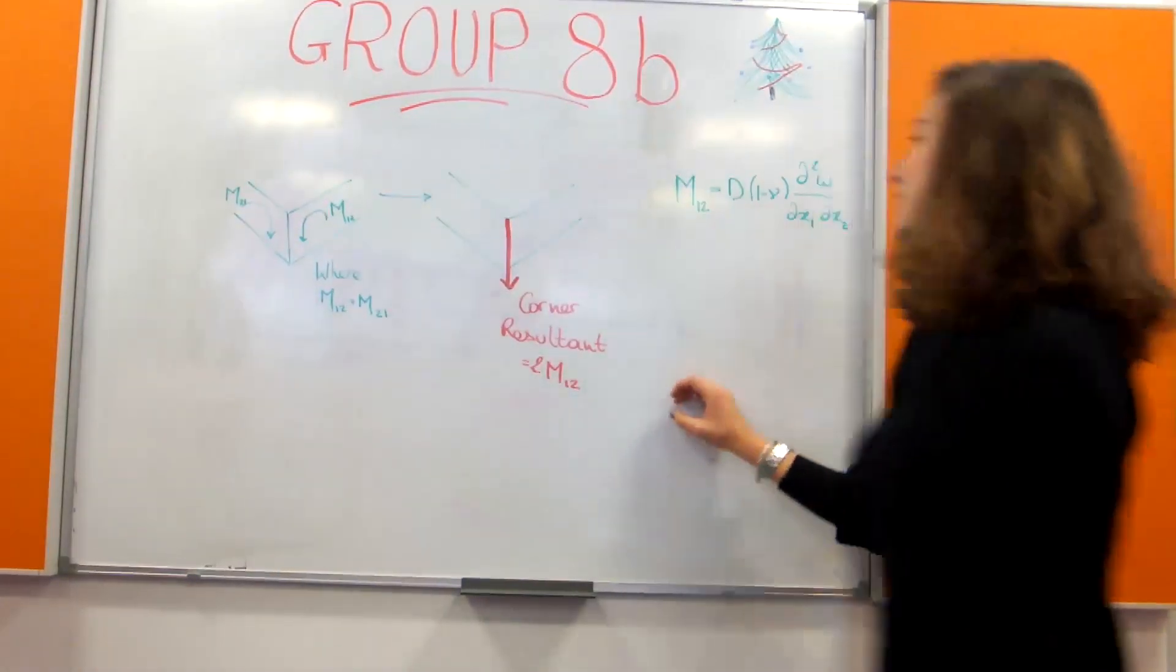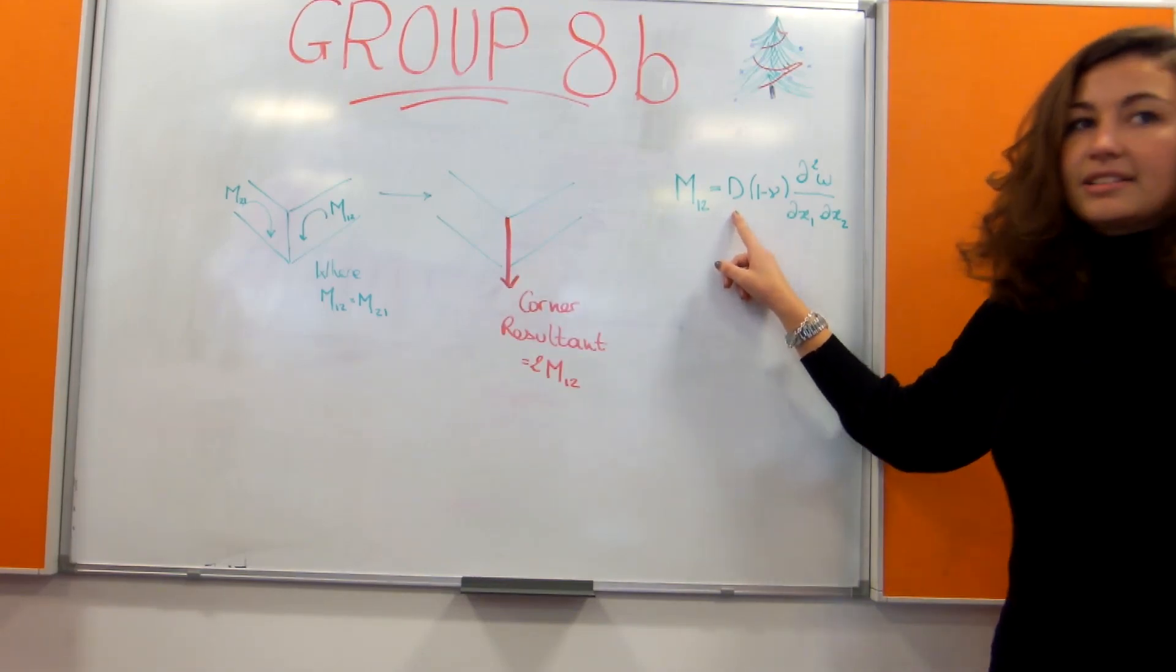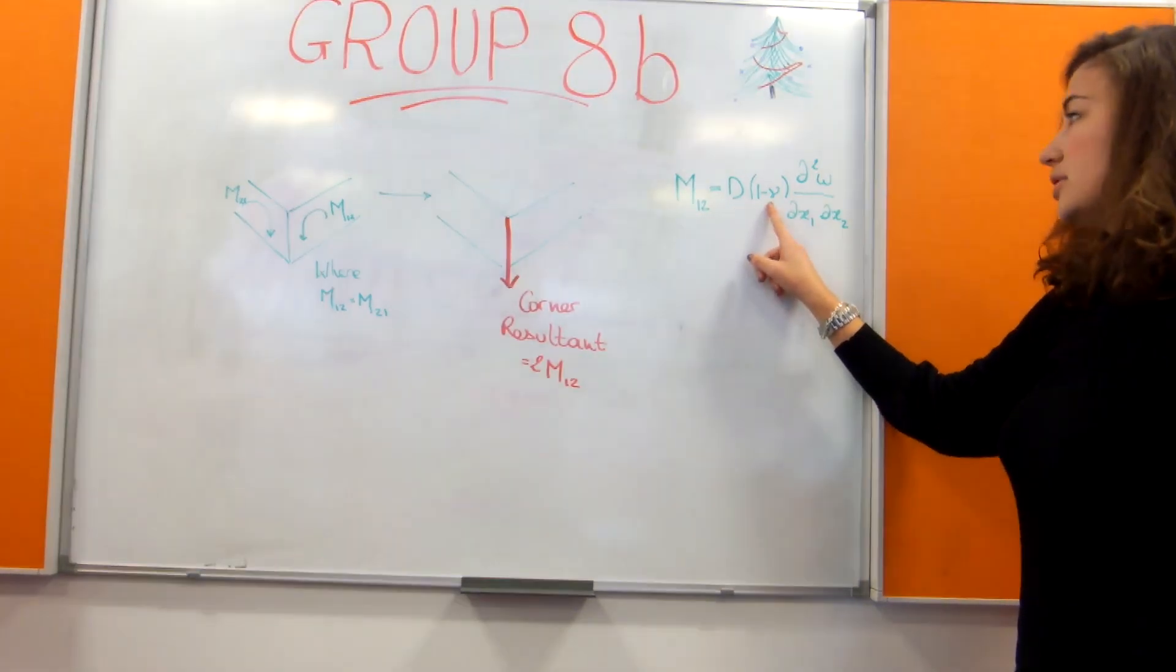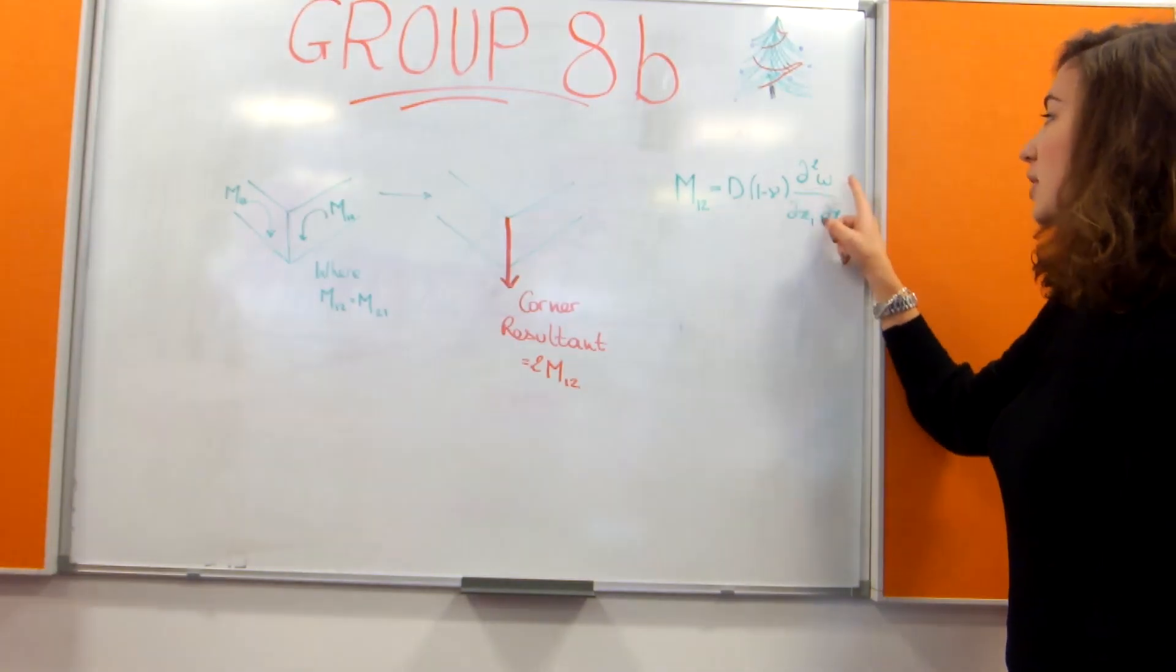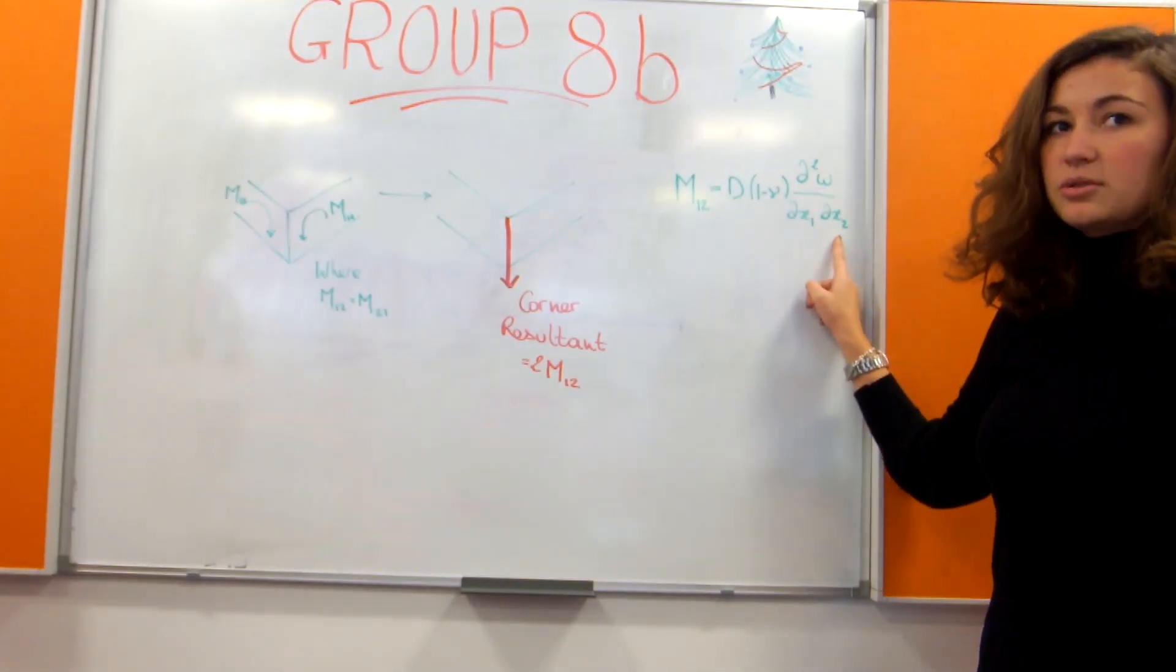Well, Stephen, it is using the twisting moment as m12 is equal to the flexural rigidity times 1 minus the Poisson's ratio times the derivative of W with respect to x1 and x2. This has been derived in the lecture notes.